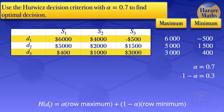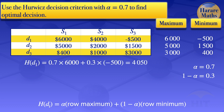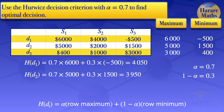Now we calculate the Hurwicz value for each decision. For decision 1: 0.7 times 6,000 plus 0.3 times minus 500, which gives us 4,050. For decision 2: 0.7 times 5,000 plus 0.3 times 1,500, which gives us 3,950. For decision 3: 0.7 times 3,000 plus 0.3 times 400, which gives us 2,220.